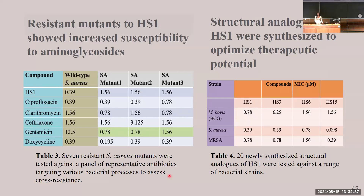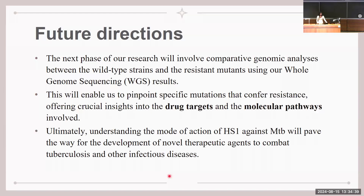Future directions include comparative genomic analyses between the wild type strain and resistant mutant strains using whole genome sequencing results. This would enable us to find specific mutations that confer resistance, insights into the drug targets, and the molecular pathways involved. The ultimate goal is to develop new therapies to combat MTB and other infectious diseases. I'll be at poster six if you'd like to discuss my project. Thank you.